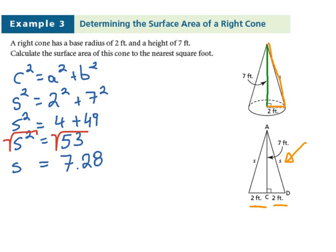Now, since we found the slant height of our cone, we could use it to find the surface area of our cone. So, as we recall from the previous slide, SA is πrs + πr².